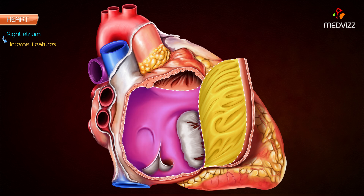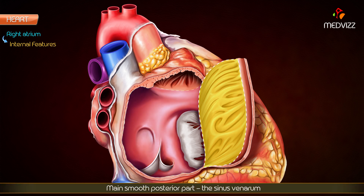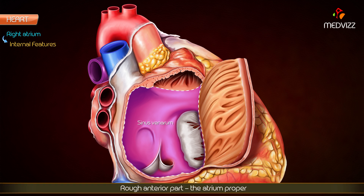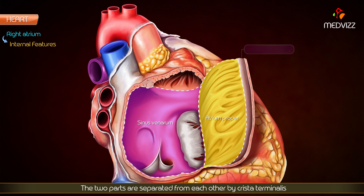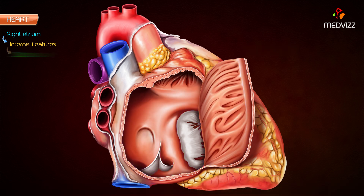Internally, the interior of the right atrium is divided into two parts: the main smooth posterior part known as the sinus venarum, and the rough anterior part called the atrium proper. The two parts are separated from each other by the crista terminalis.